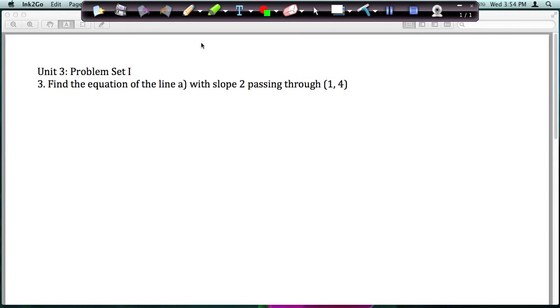Okay, let's look at problem set 1, number 3, and it says find the equation of the line with slope 2 and passing through the point (1, 4).